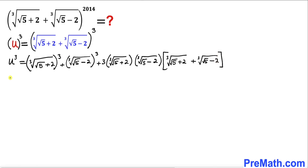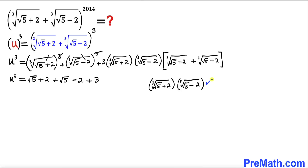Let's simplify this equation. On the right hand side, the cube and cube root undo each other, giving us (√5+2) and (√5−2). Then plus 3 times — let's focus on the part inside the parenthesis. This whole thing can be written under the same radical as the cube root of (√5+2) times (√5−2).